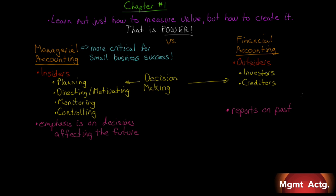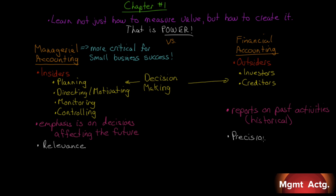In fact, one of the bases of financial accounting is historical pricing — we record transactions based on what we paid for them, based on what they cost at that time. Managerial accounting, on the other hand, stresses relevance over anything else. We need the right data and the right information for the decision at hand. Financial accounting is about precision — measuring the cost of our inventory, measuring the cost of our fixed assets.